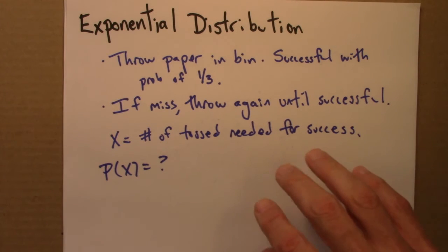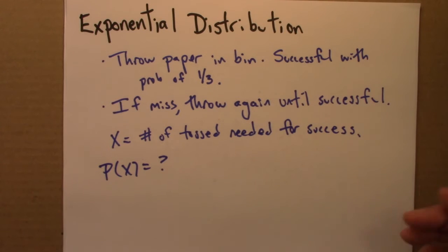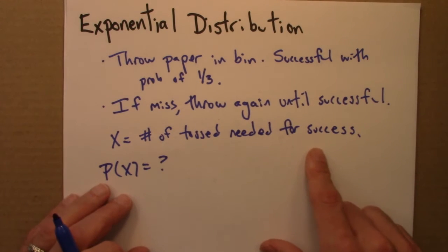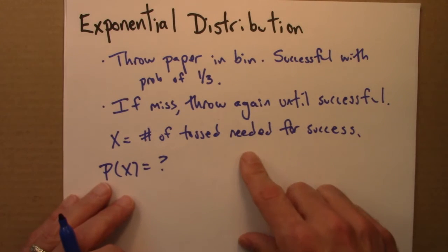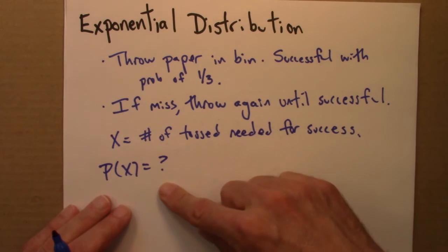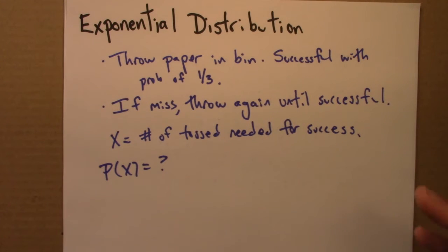And sometimes I'm going to get unlucky and need a lot of throws. Four or five or six. It's possible I might even need eight or nine or ten. But most of the time I'm going to need one or two or three. So the question is, how is this x, the number of tosses needed for success, how is that distributed? It's a random variable. How would it be distributed?